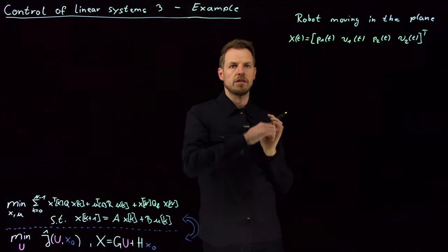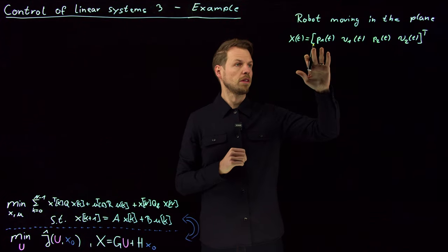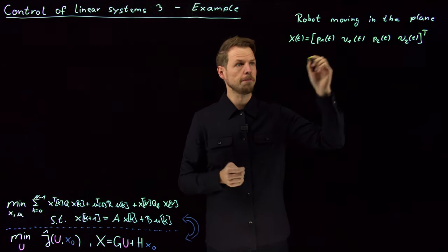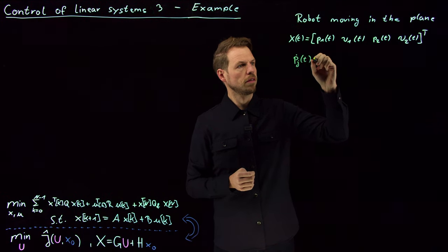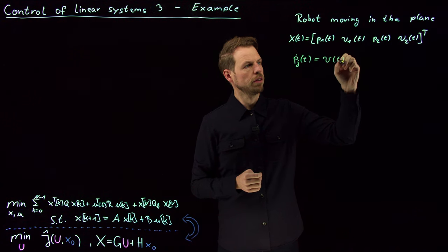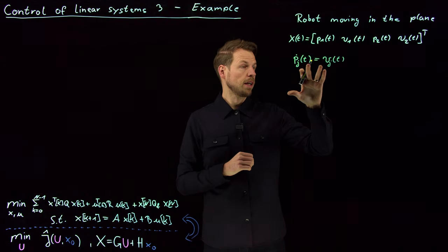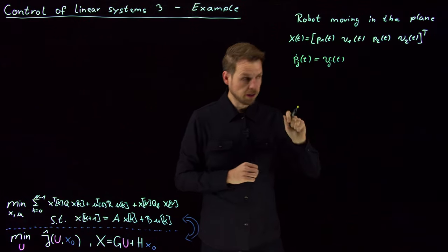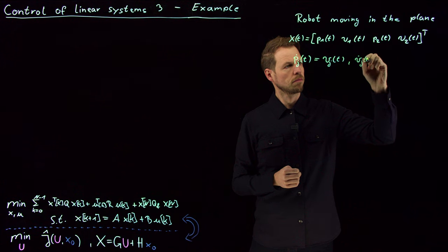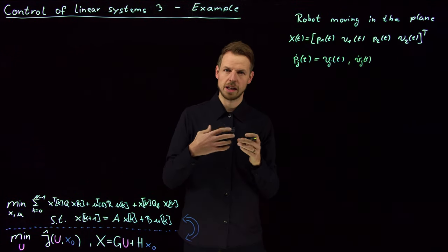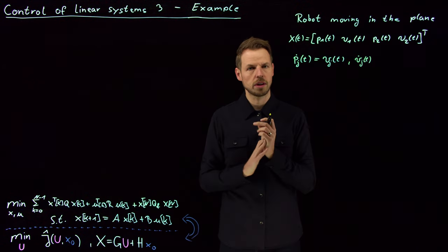We're going to assume very simple dynamics. We have seen this in modeling the damped harmonic oscillator. The change of position is simply the velocity, so p dot in the jth coordinate of t is simply v_j of t. So we will see both coordinates are actually decoupled. And the law for the velocity is given by the acceleration.